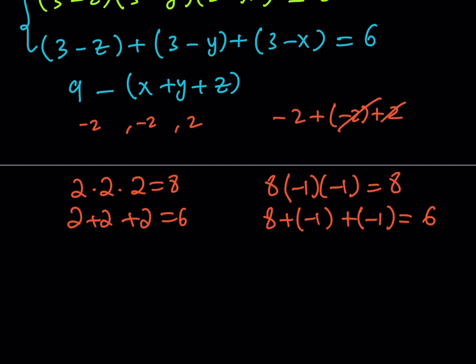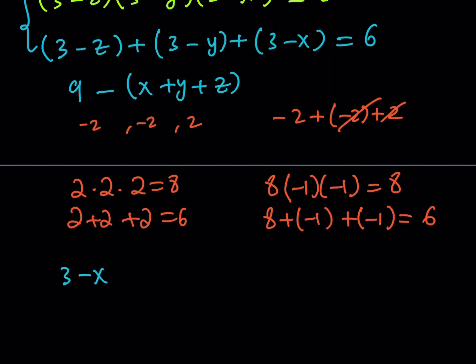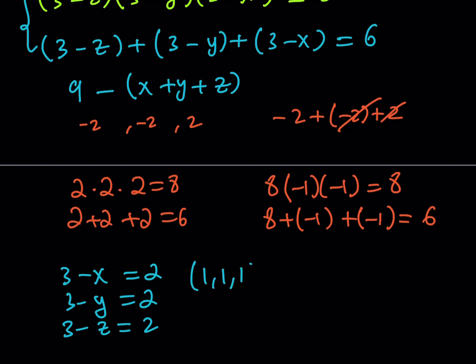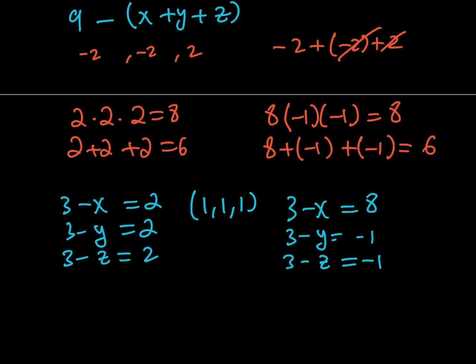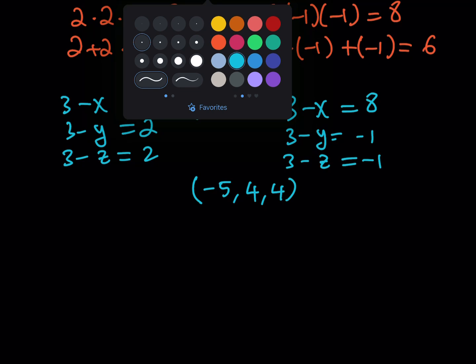Let's solve each case. Since 3 − x, 3 − y, 3 − z are the factors: from {2, 2, 2}, we get x = y = z = 1. From {8, −1, −1}: if 3 − x = 8 then x = −5; if 3 − y = −1 then y = 4; if 3 − z = −1 then z = 4. So we get the ordered triple (−5, 4, 4), and x, y, z can be permuted.